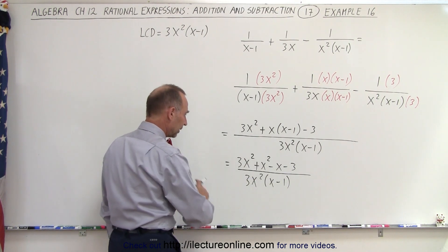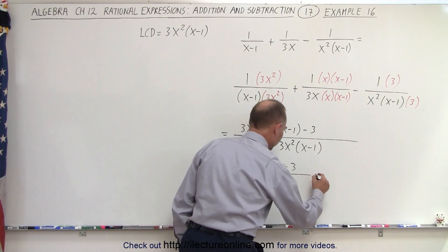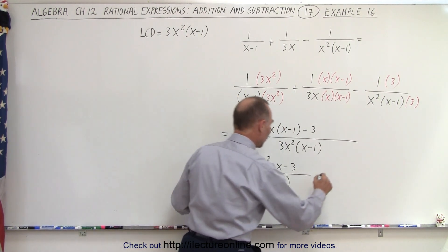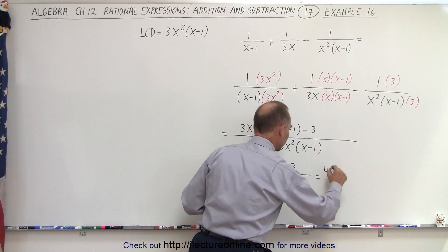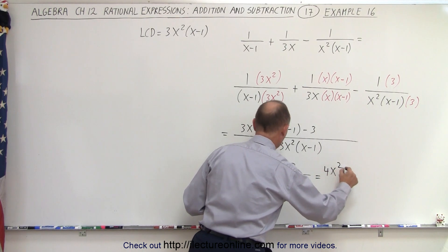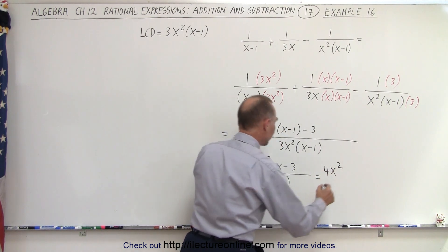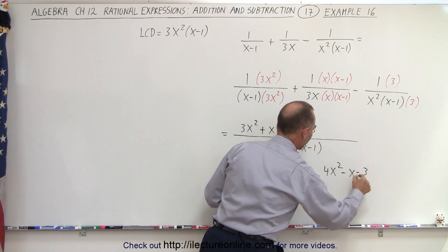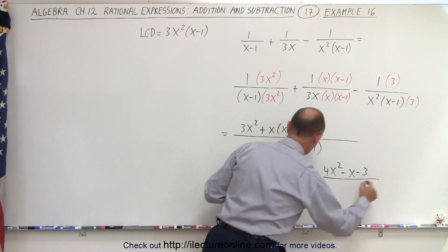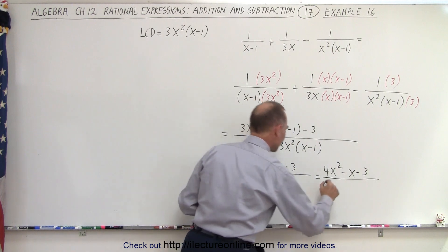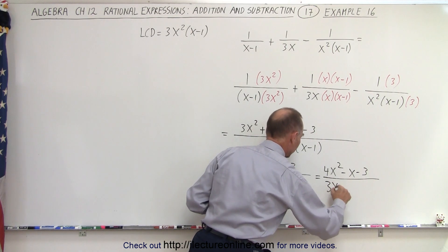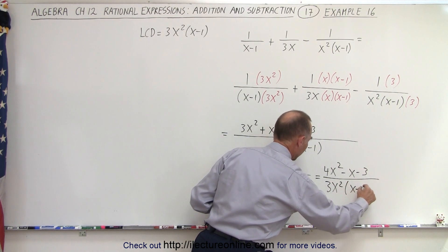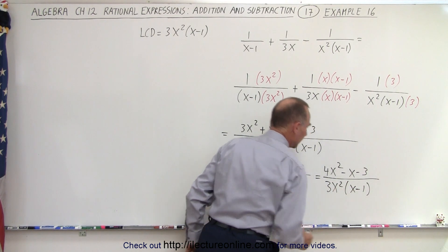And collecting common terms, this is equal to 4x squared minus x minus 3, all divided by 3x squared times x minus 1.